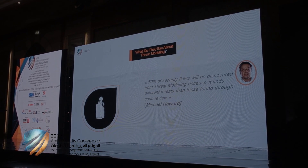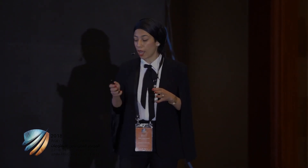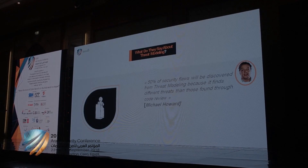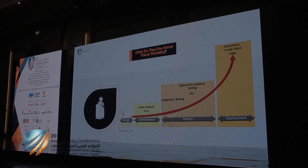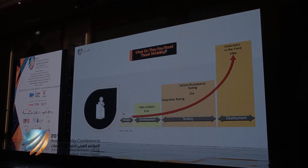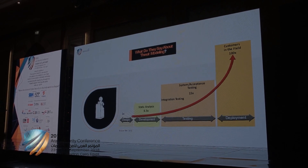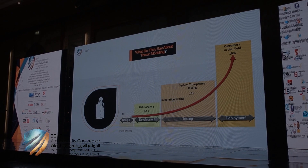Michael Howard, software security expert from Microsoft, said that threat modeling can find 50% of security flaws, because this approach can discover different threats than those found with code review. Also, IBM published a statistic about time consumed to mitigate threats. They said it costs 15 times more to mitigate security flaws identified in the test phase than in the design phase, and it costs 100 times more to mitigate a deployed application.